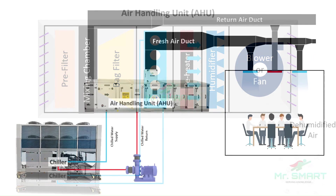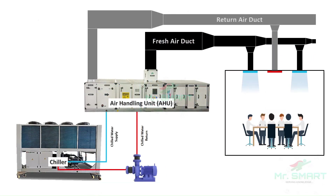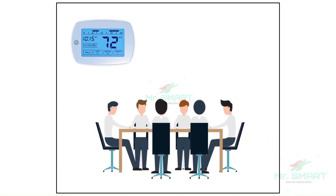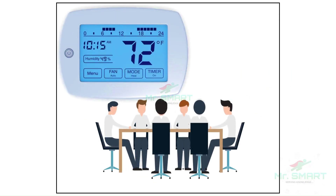In modern HVAC systems, controls on temperature and humidity are handled automatically with the help of thermostats. A thermostat placed inside the area monitors conditions in real time and takes necessary control actions against temperature and humidity set points given to it as per our preference.